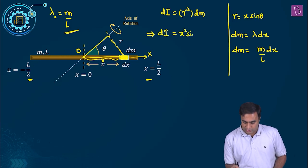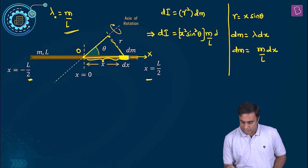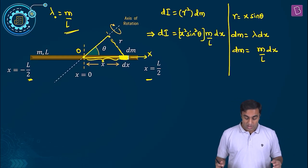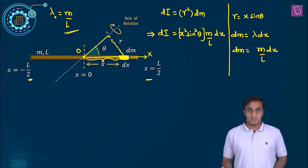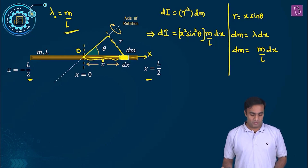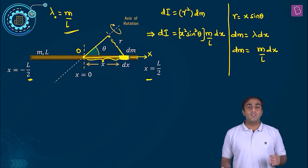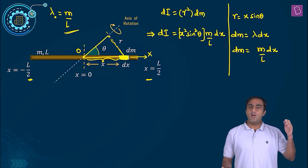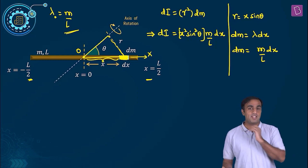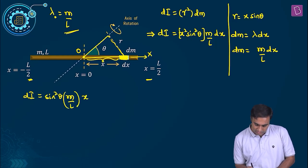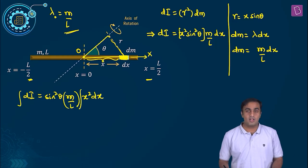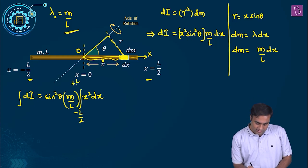R squared will give us x² sin²θ, dm will give us m by L into dx. How do I find the net moment of inertia of this rod about the given axis of rotation? We need to integrate. What are my integration limits? To consider that, we need to look at the rod — how is it built. We take the differential elements all the way from minus L by 2 to plus L by 2. We construct this rod by placing such differential elements, infinite number of them, all the way from x equal to minus L by 2 till x equal to plus L by 2. So when we integrate, the integration limits turn out to be minus L by 2 and plus L by 2 respectively.